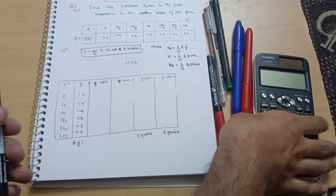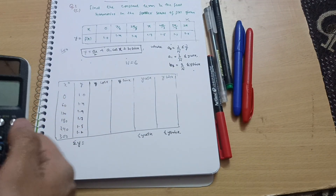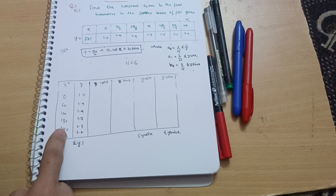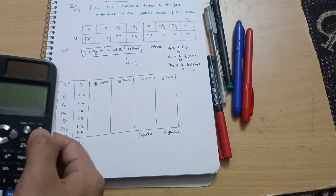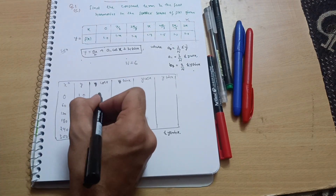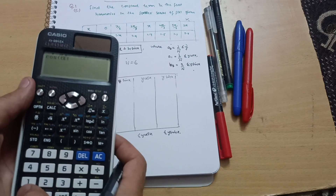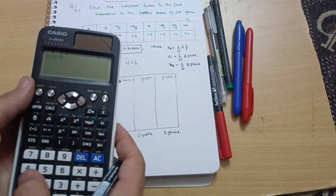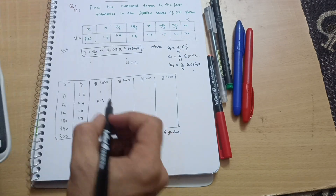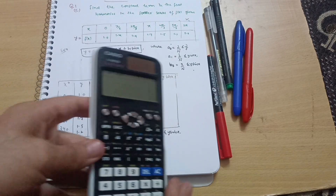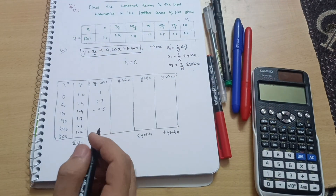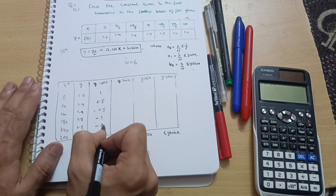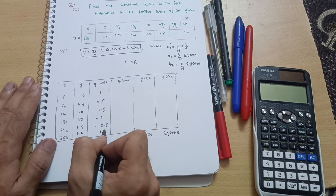Calculating cos(x): the x values convert to angles as follows — 0°, 60°, 120°, 180°, 240°, 300°. So: cos 0° = 1, cos 60° = 0.5, cos 120° = −0.5, cos 180° = −1, cos 240° = −0.5, cos 300° = 0.5.